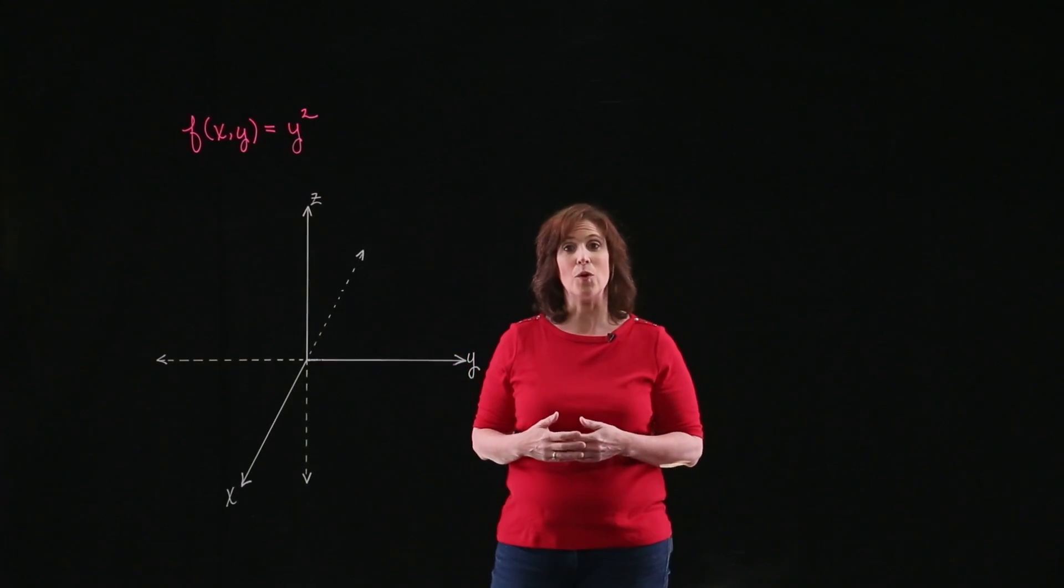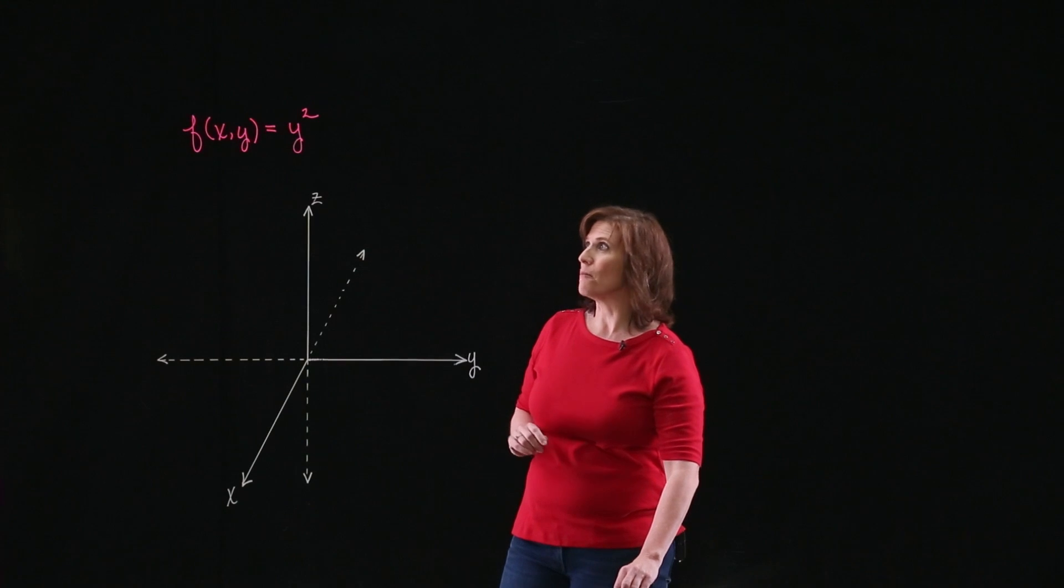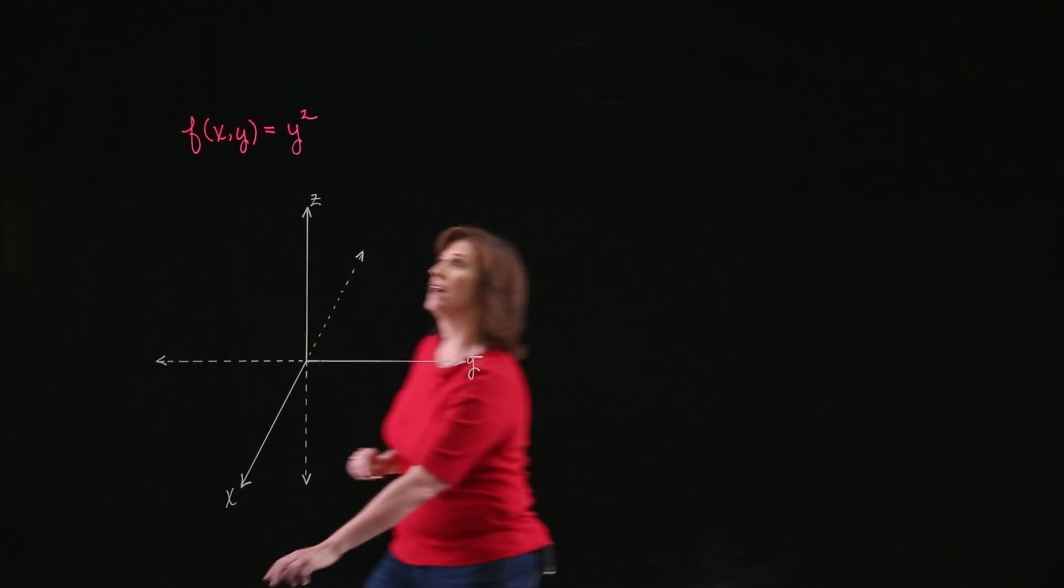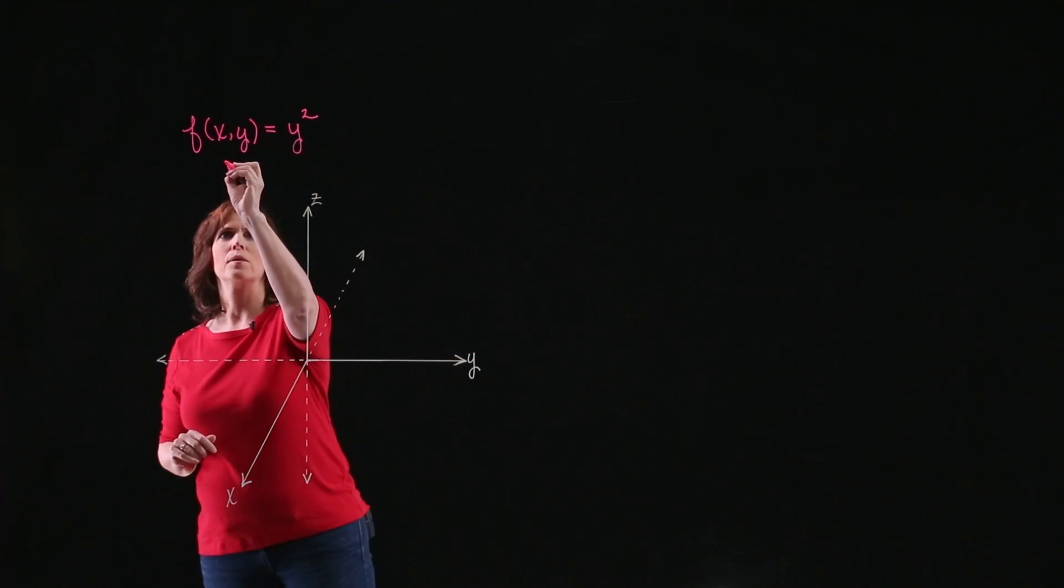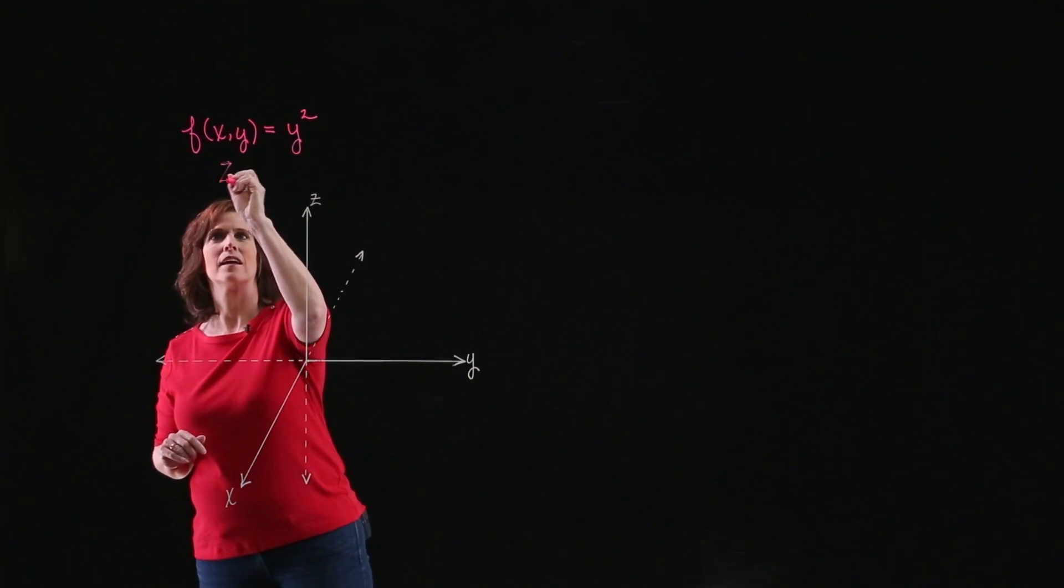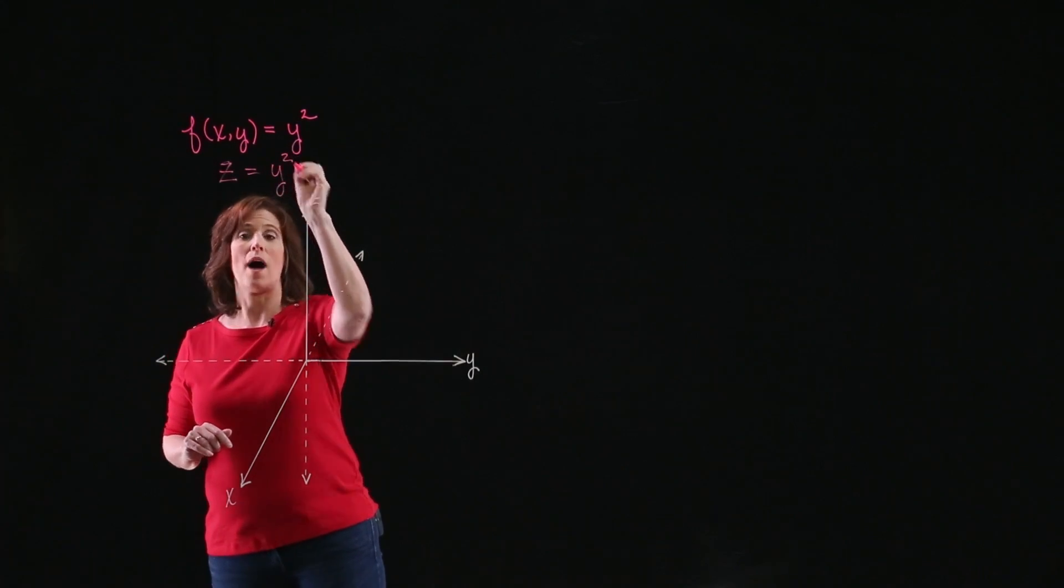Now, in order to do this, we're going to look at what we call traces. And we're going to start out by looking at the trace along the yz-axis. Now, why would we do that? Well, if I take a look at my function, I can write this as z equals y squared.